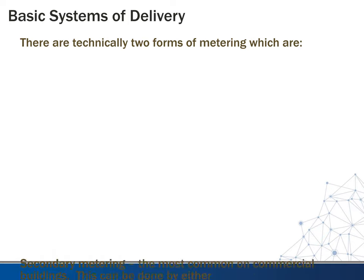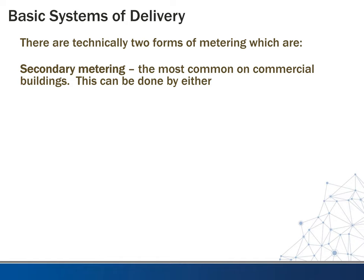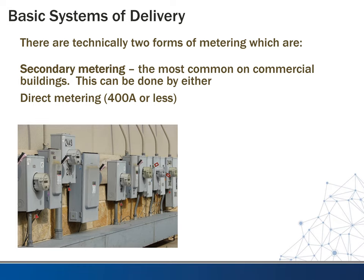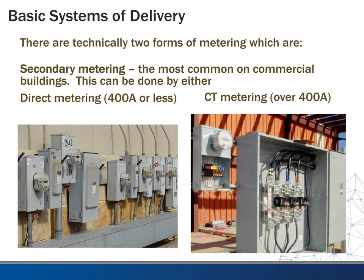Secondary metering — the most common on commercial buildings — can be done in a couple of different ways. The first is direct metering, which usually occurs for anything 400 amps or less. You would see these on the back of a strip mall, for example — services running directly through the meters straight to panels. Anything over 400 amps is usually metered with a CT or current transformer. In that case, you'll see a CT cabinet, with a smaller conduit going over to the meter base. The utility company usually has guidelines specifying what kind of cabinet they want, and they come and install the CTs.